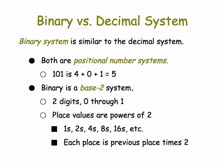The binary system works the same way. Its digits have a value that is represented by their position. So in 101, the first digit on the left has a place value of 4, whereas the 1 on the right has a place value of 1. Because the binary system is a base 2 system, it has two digits, 0 and 1, and its place values are powers of 2. So there's the ones place, the twos place, the fours place, the eights place, and so on, where each place value is the previous place times 2.